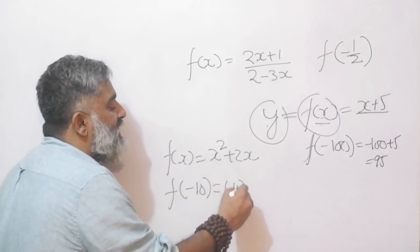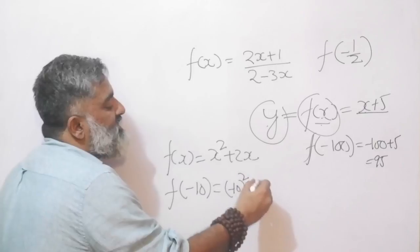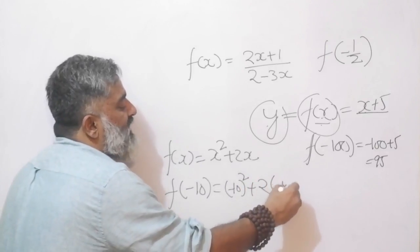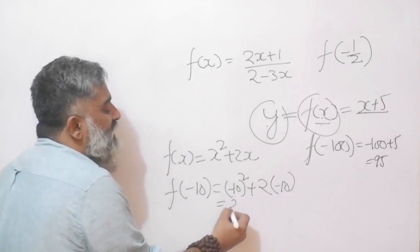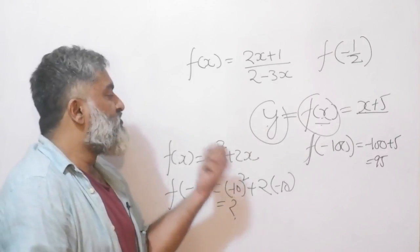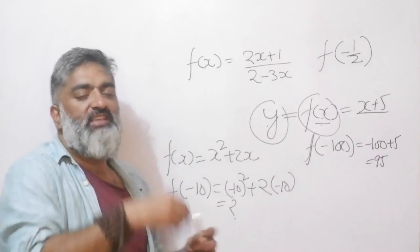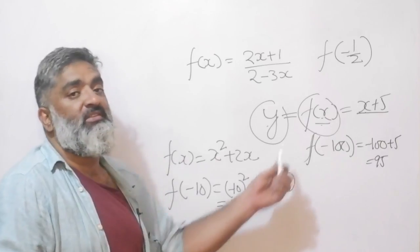Instead of this x I will get minus 10 square. Instead of this x I will have 2 into minus 10, and calculating this value is not going to be too much of a challenge. This is the zero level concept, everybody should be familiar with this.